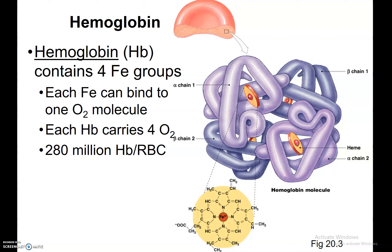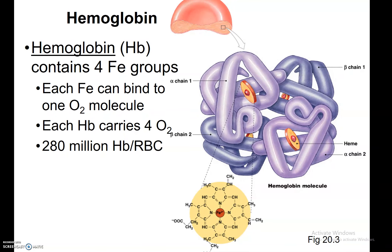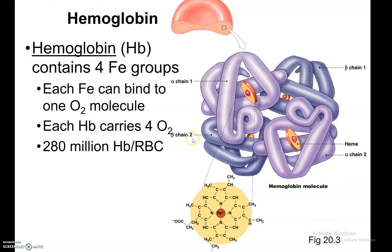So what is this magical hemoglobin that we keep talking about? Hemoglobin is a molecule that contains a ferrous group in it. Hemoglobin, Hb, contains four of these ferrous units. The ferrous units are linked to nitrogen and carbon rings, which give rise to what we call a heme group.